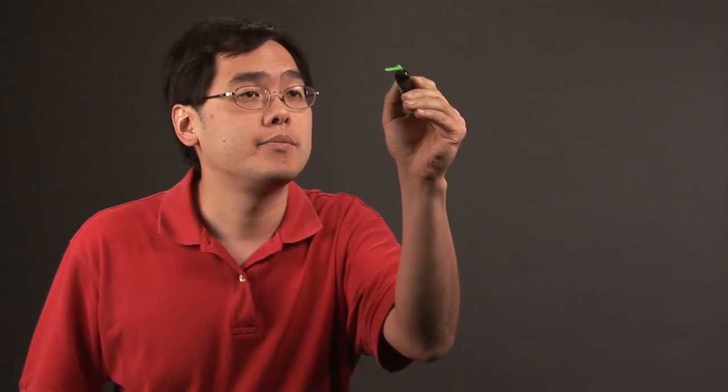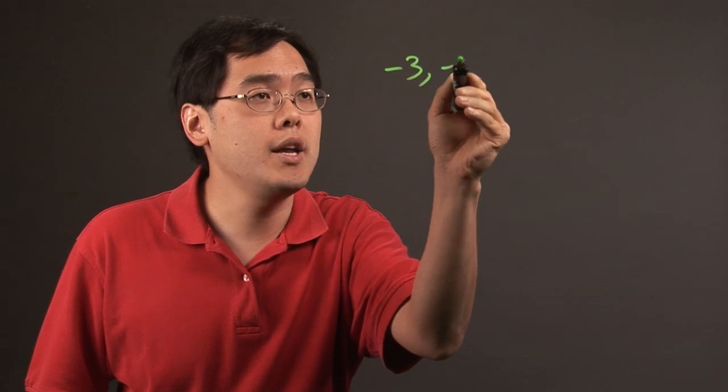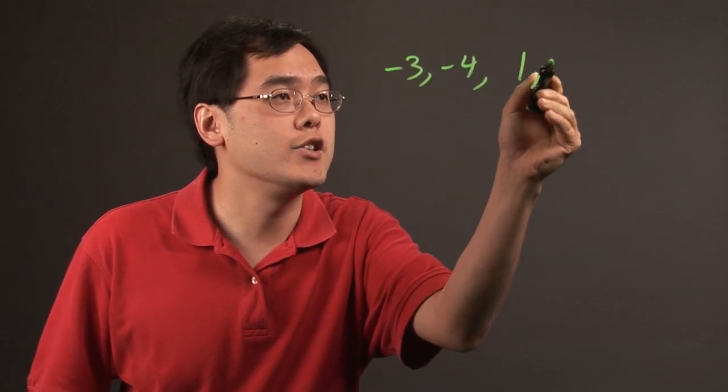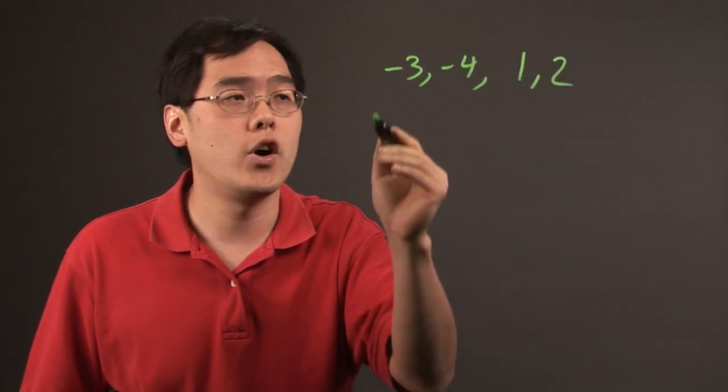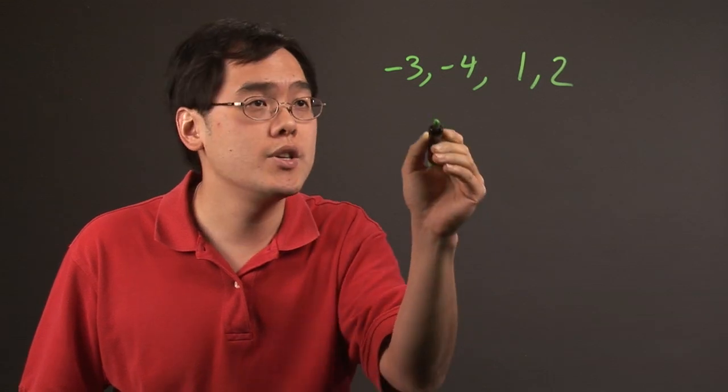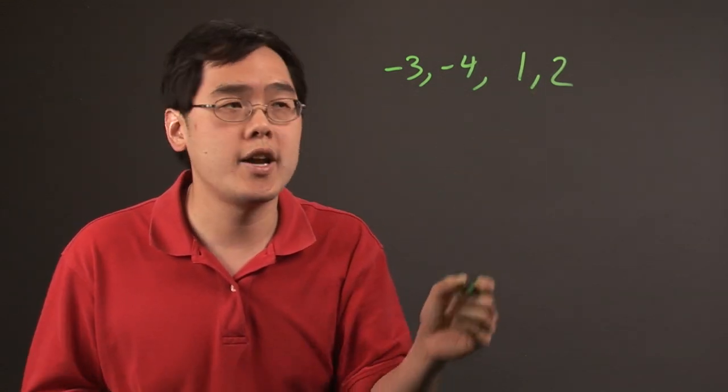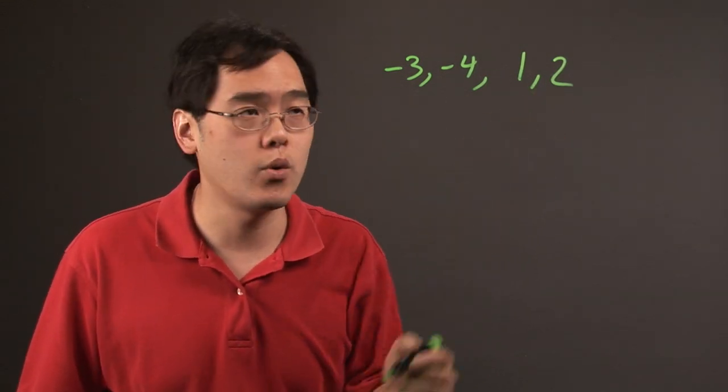So for example, if you have negative 3, negative 4, and 1, and 2, and you want to find the average of all those numbers, all you really do is you add all of them together and then you divide by the total number that you see here, which is 4.